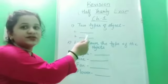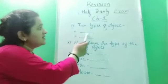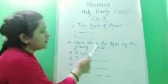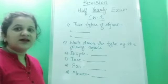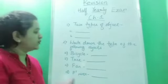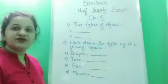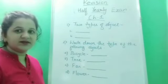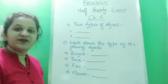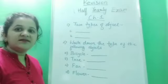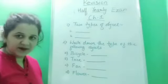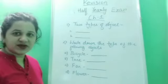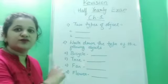So you have to write down the names of the two types of objects in your notebook — note down the question, then part A and part B. Now, come to the next question: write down the type of the following. The first one is bicycle — it is a man-made object, so write down man-made. Next, tree — tree is a natural object, so write down natural object. Next, fan — it is a man-made object, so write down man-made. Next, flower — it is a natural object. So this is how you note down the question and write the answer in front of them.